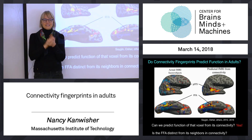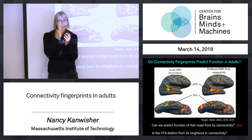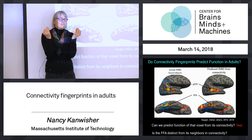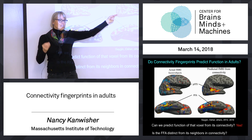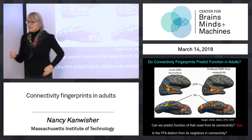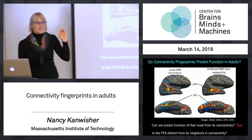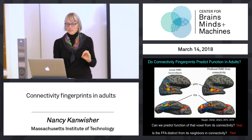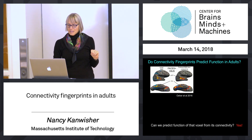The key idea is: is there a systematic relationship between long-range connectivity of a voxel and its function, its selectivity? And this says yes for faces. So that tells us that in adults those face regions have distinct connectivity.